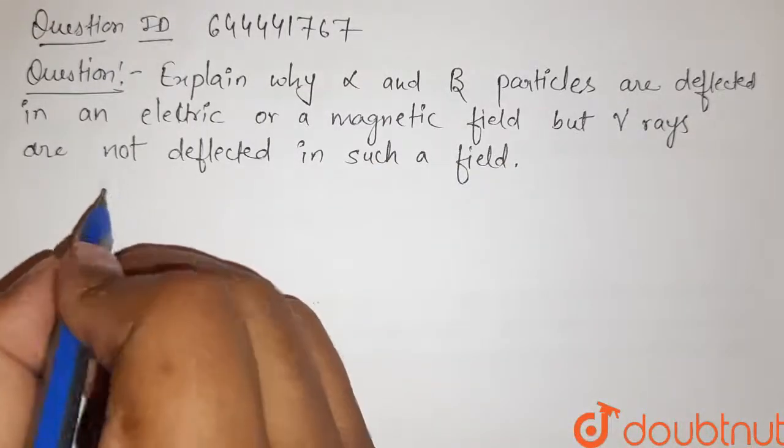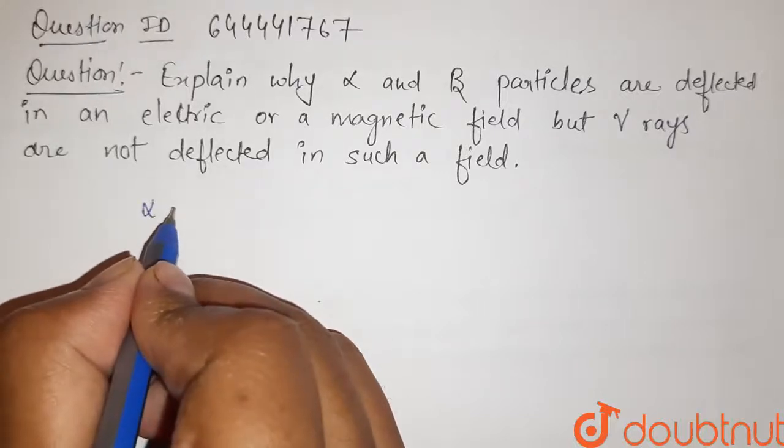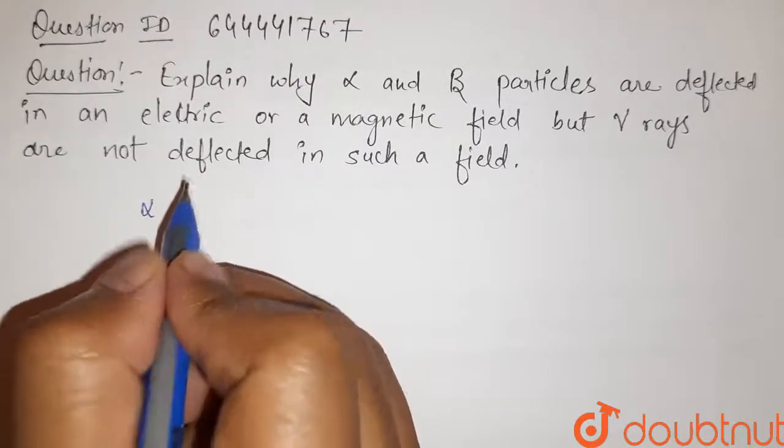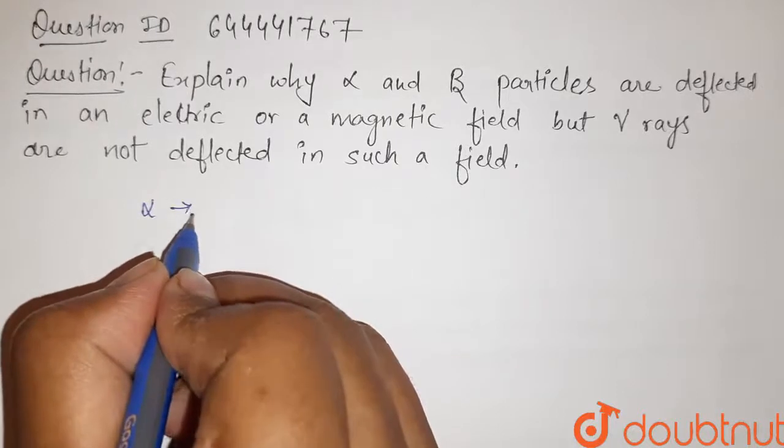So first of all, we will talk about alpha and beta and gamma particles. So what is alpha particle?